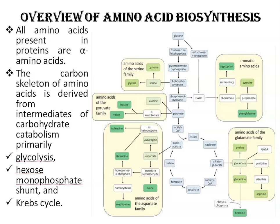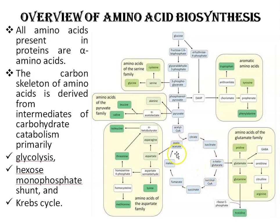All amino acids present in proteins are alpha amino acids. The carbon skeleton of amino acids is derived from intermediates of carbohydrate metabolism pathways — various metabolic pathways like glycolysis, the hexose monophosphate pathway, and the Krebs cycle. As you can see in this diagram, these are the different biosynthetic families of amino acids. In the glutamate family, the precursor is alpha-ketoglutarate. In the aspartate family, the precursor is oxaloacetate, which is part of the Krebs cycle. Alpha-ketoglutarate is also part of the citric acid cycle.